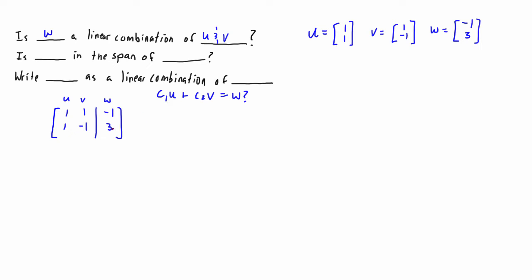If we go ahead and solve this by getting it down to reduced row echelon form, we'll be able to determine if this augmented matrix has one solution, infinite solutions, or zero solutions. As long as there is at least one solution, that means w is a linear combination of the other vectors. If there is no solution, then w is not a linear combination.